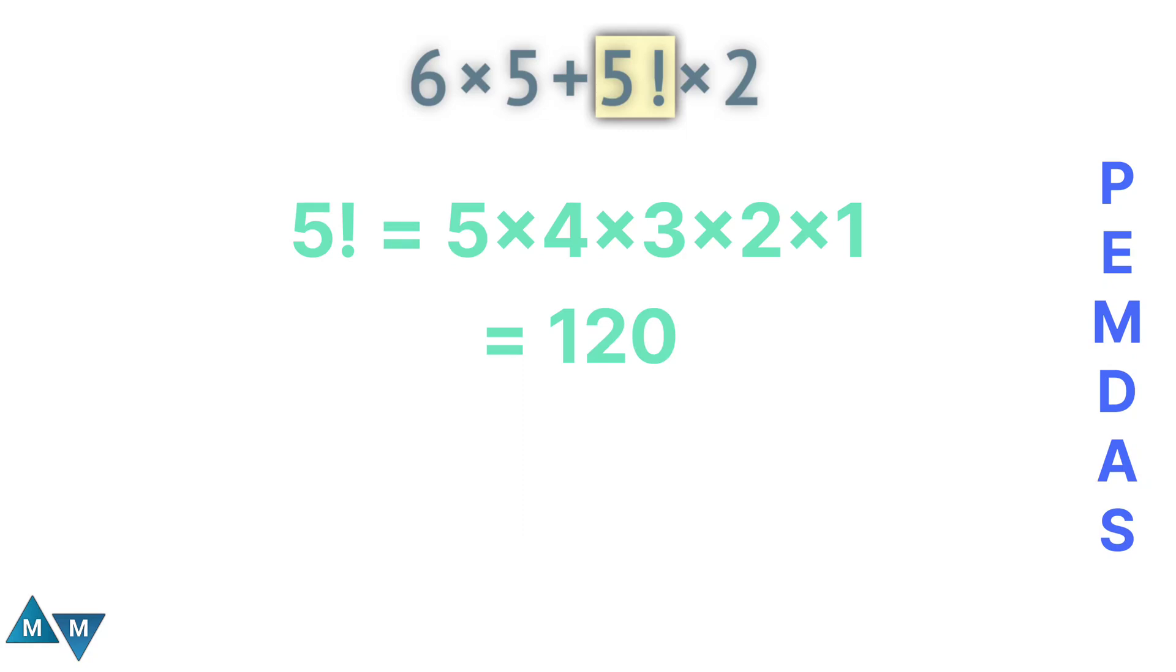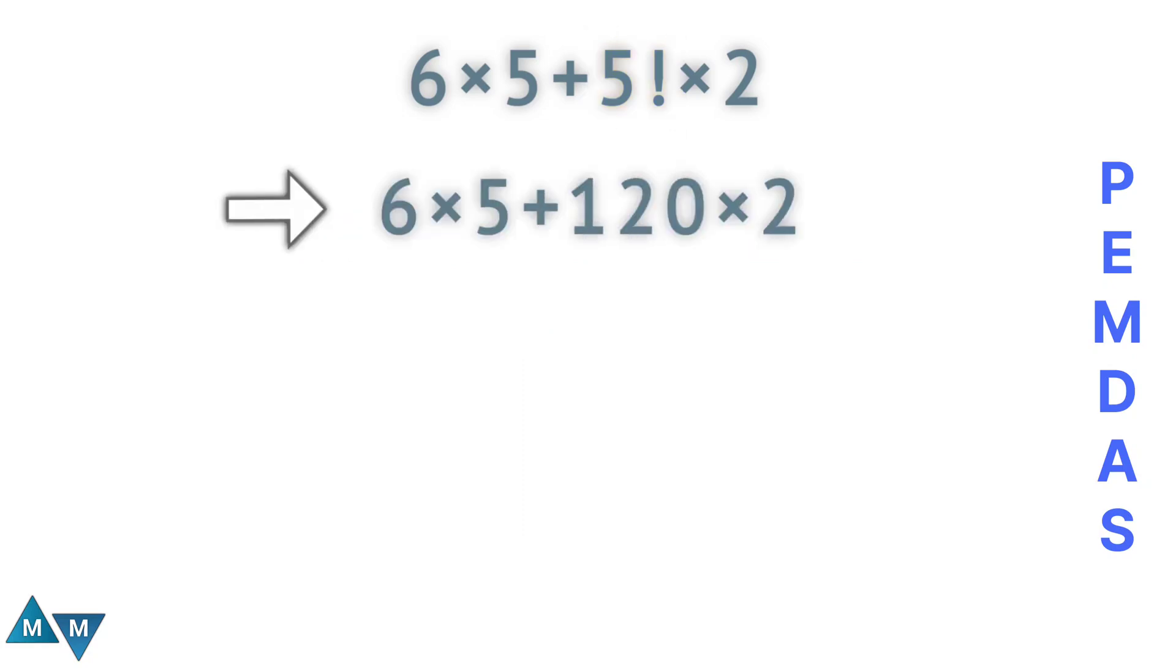Now we have the following expression. Now the expression only contains plus sign and multiplication signs. According to PEMDAS rule, multiplication has a higher priority than addition, so this is what I have to do first. So 6 times 5 will be our first move, which is equals to 30.